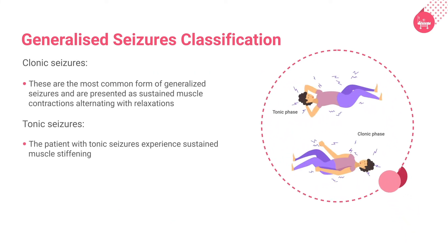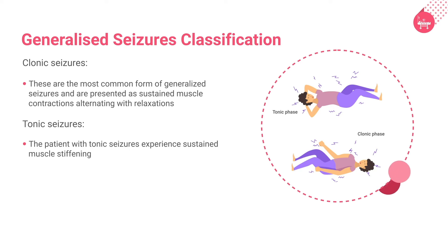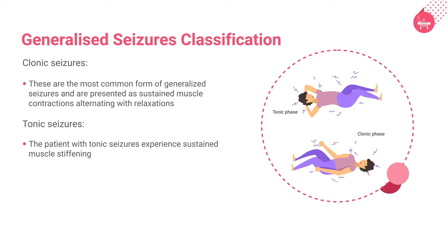Clonic seizures are characterized by sustained muscle contractions followed by alternate relaxations, and represent the most common form of epilepsy. Tonic seizures, on the other hand, are characterized by sustained muscle stiffening.